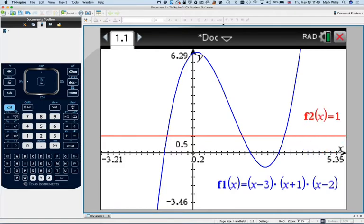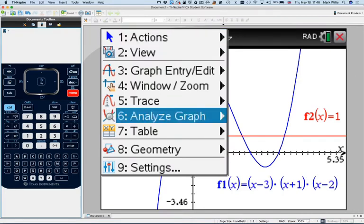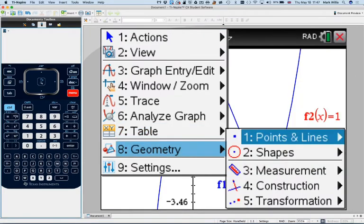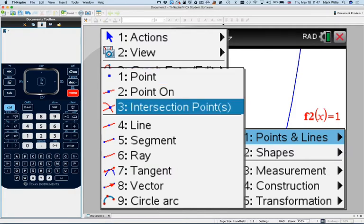Let's just have a look at that. To do this you do menu, and instead of going to number 6, analyze the graph, you now actually go to number 8, geometry. You go to points and lines, and then you go to number 3, intersect points.